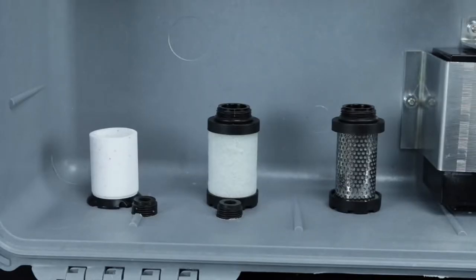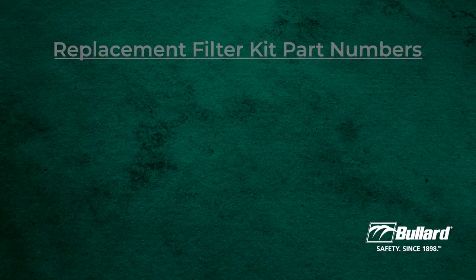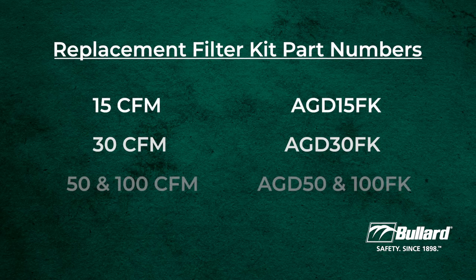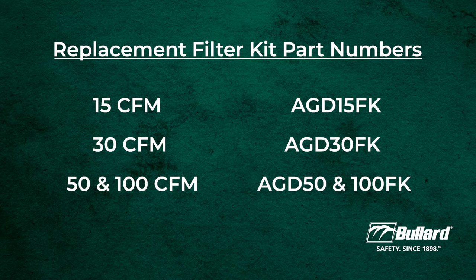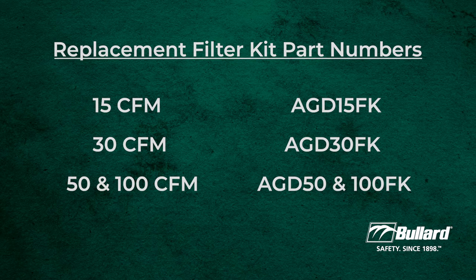Bullard offers three different kits for filter replacement depending on the CFM of the unit. Each kit consists of three filters. Replacement filter kit part numbers are as shown.